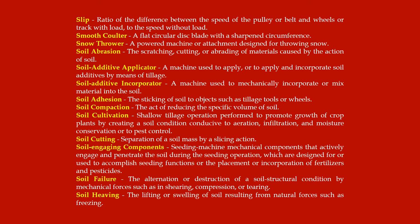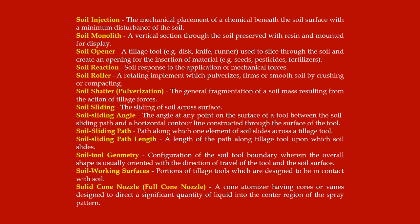Soil-engaging components — seeding machine: mechanical components that actively engage and penetrate the soil during the seeding operation, designed to accomplish seeding functions or the placement and incorporation of fertilizers and pesticides. Soil failure: the alteration or destruction of a soil structural condition by mechanical forces such as shearing, compression, or tearing.